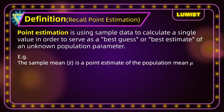However, x-bar is a random variable as we discussed. It would not be proper to say that a random statistic is equal to some constant parameter mu. Even though we calculate x-bar to be equal to some specific value, we will not be able to say that value equals mu because x-bar is a random variable. Instead we say x-bar is equal to mu with some uncertainty.